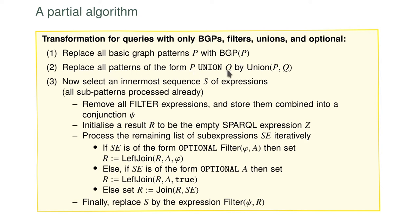We can also directly replace unions of two things by using the union operator. What remains are filters and optionals and these already-translated expressions that occur together in a single group graph pattern. You can put a filter right next to a BGP and then another BGP and another filter, or you can put an optional in between. The third point is about resolving this and making a properly nested expression. The first thing we do is remove all the filter expressions and store them for later use in a conjunction — the conjunction of all the filter conditions — since filters are usually applied after computing the query results.